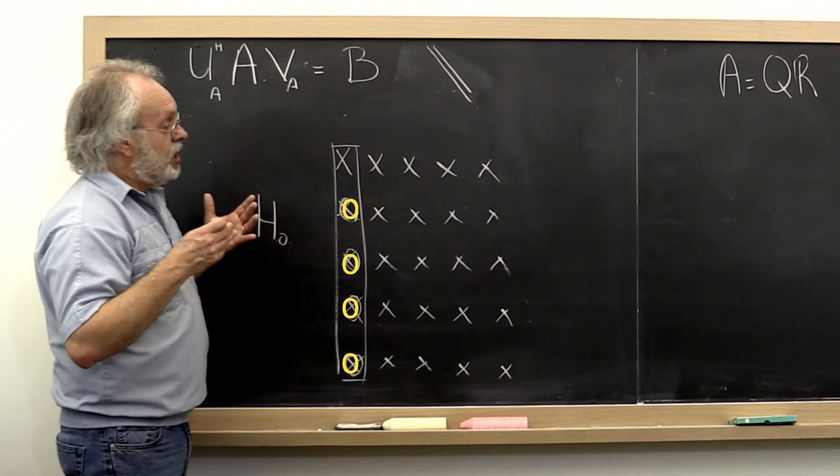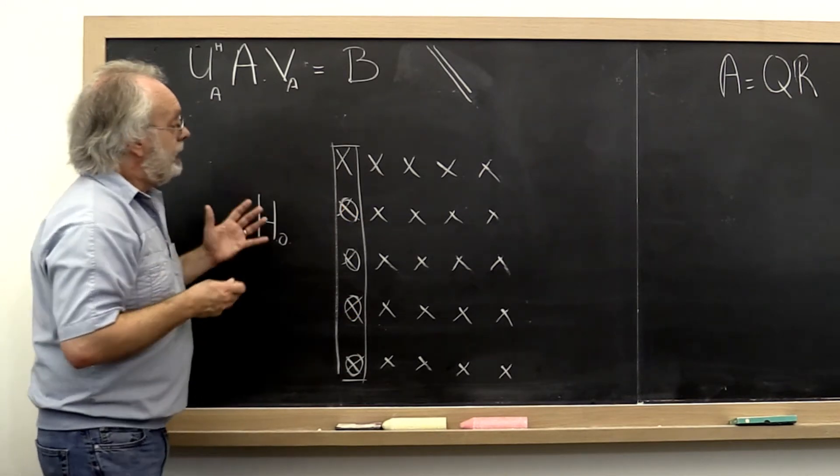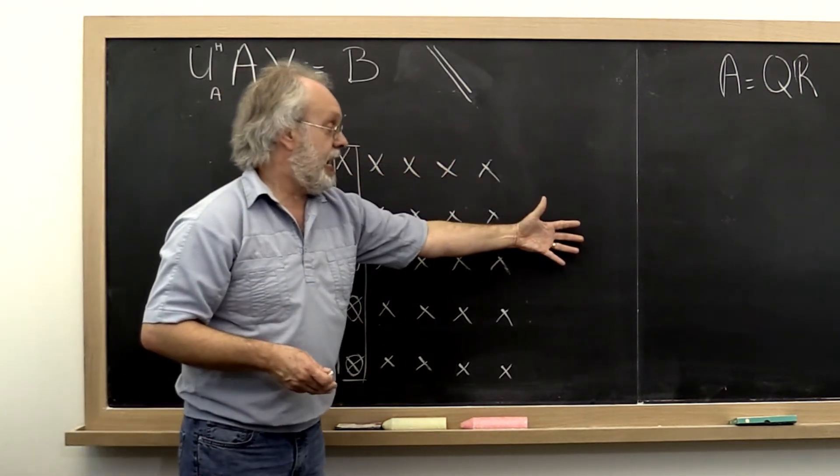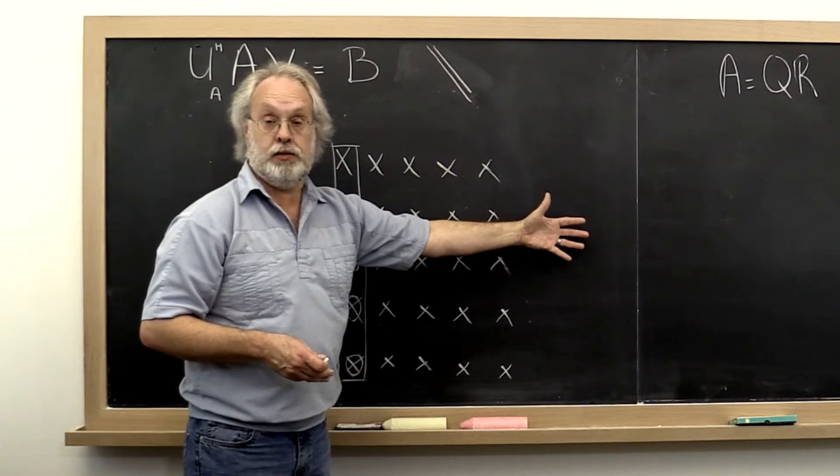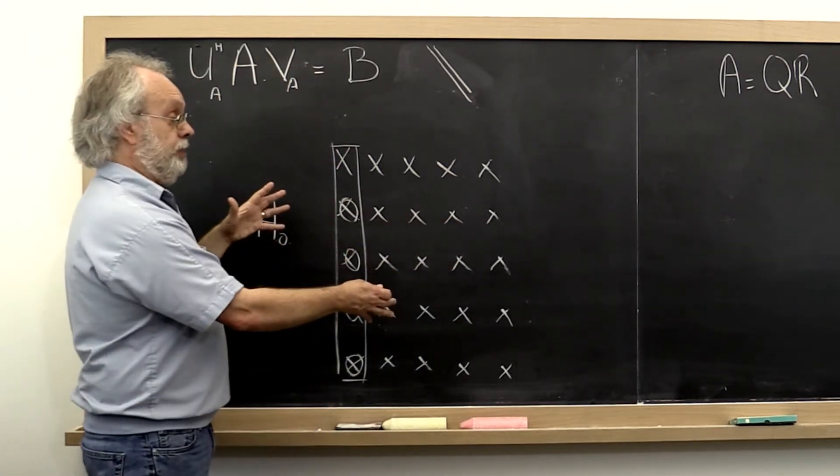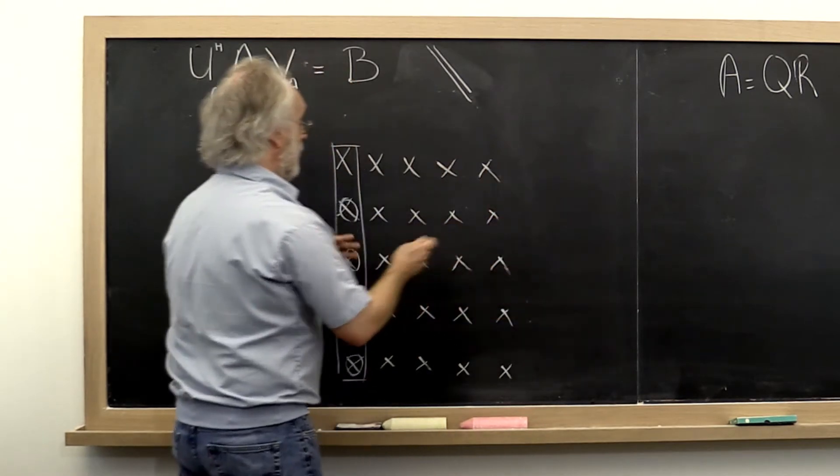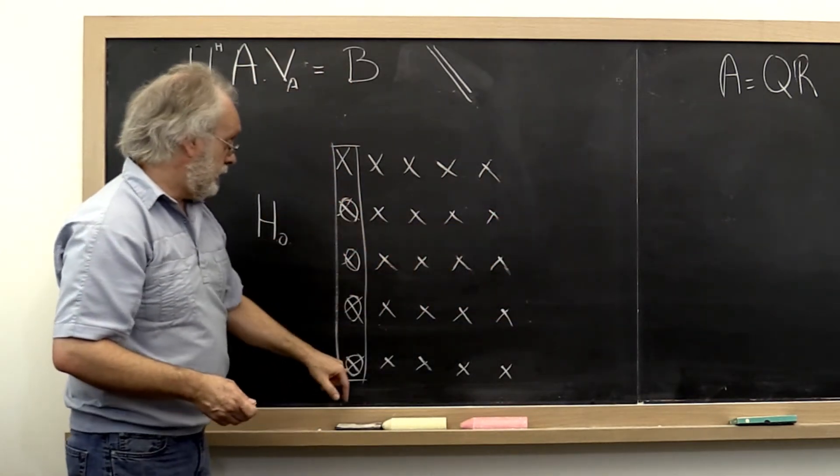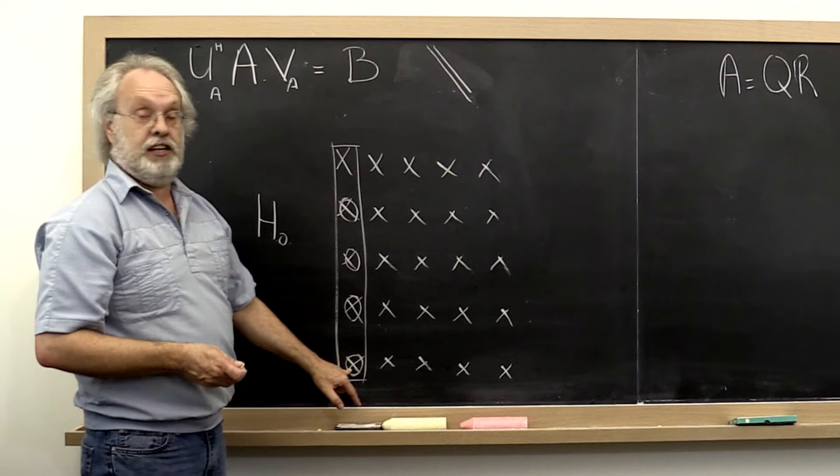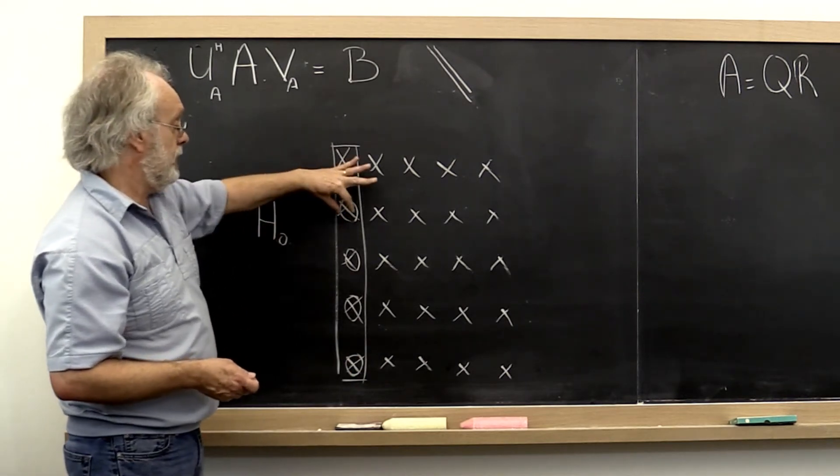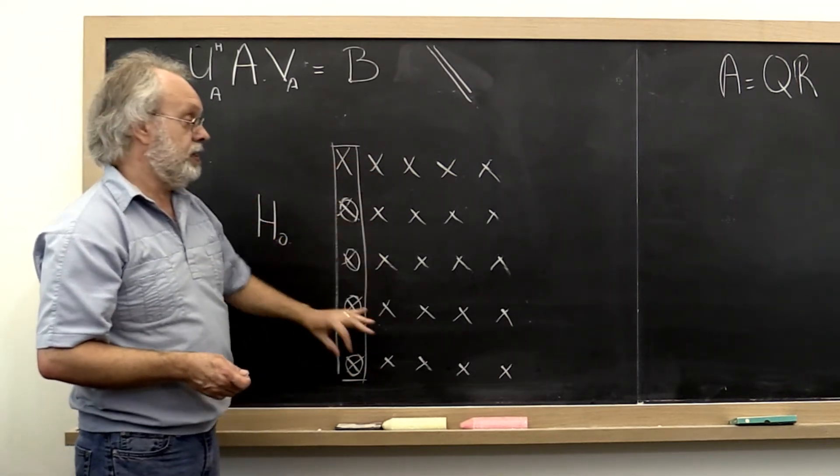Now we can apply different Householder transformations from the right. When we reduced to tridiagonal form, we had to apply the same Householder transformation from the right. And as a result, these zeros would then be filled in had we chosen this Householder transformation to place zeros right here.